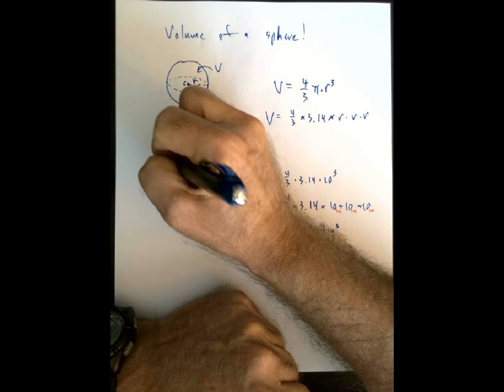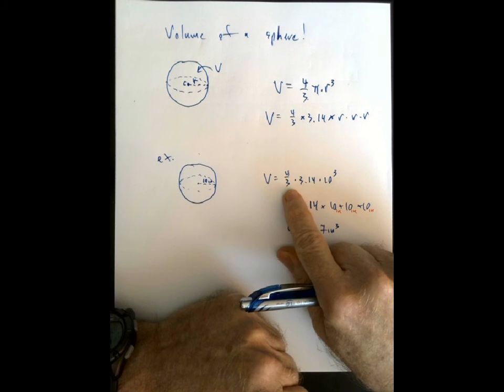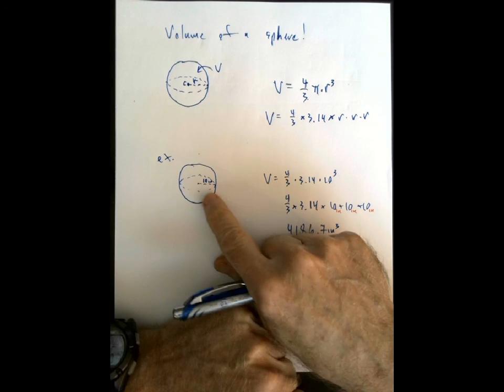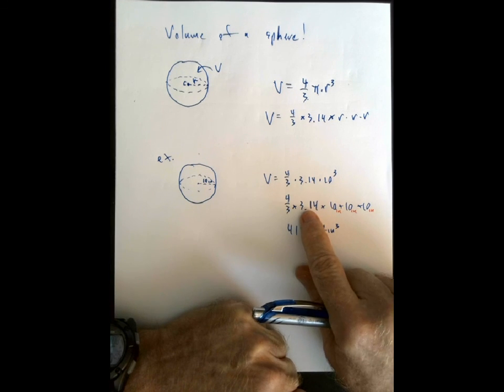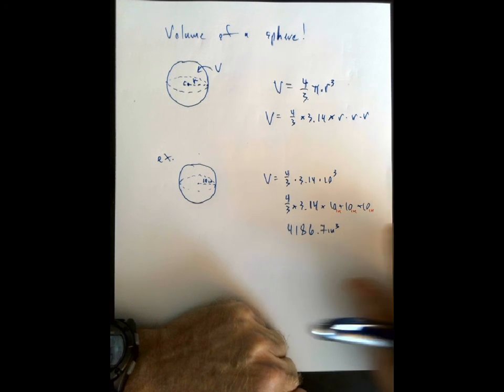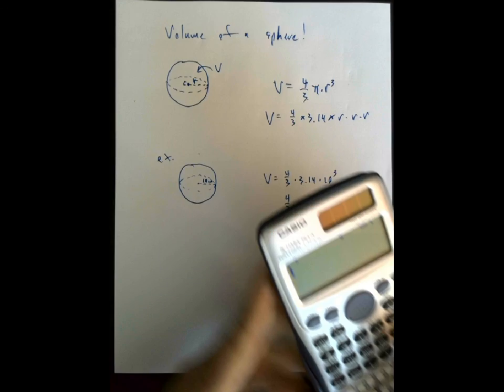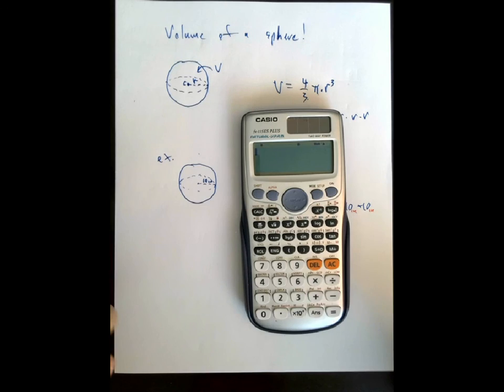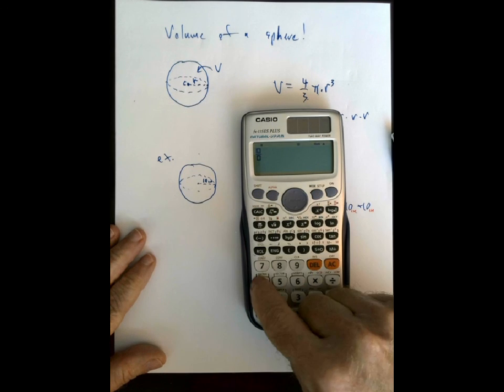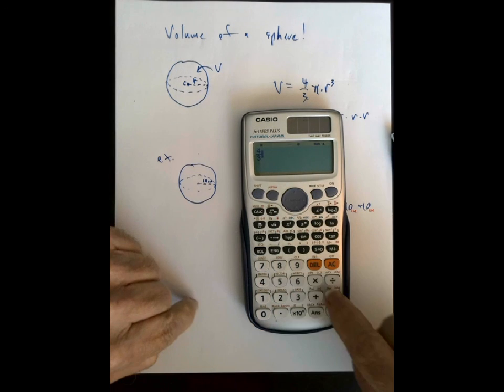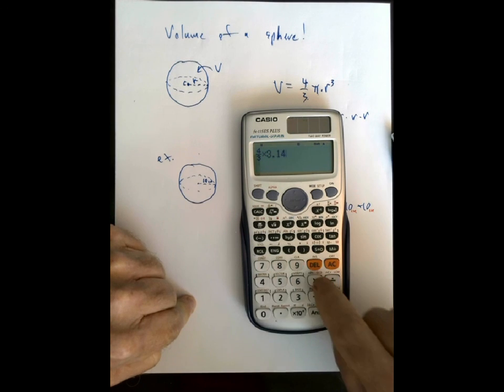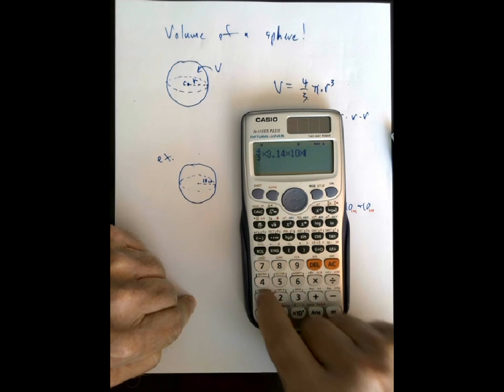So, for instance, here is example 1. The volume is 4 over 3 times 3.14, and the radius is 10 there, so I'm going to write 10 to the third power. Now, that means 4 over 3 times 3.14 times 10 times 10 times 10. Now, in my calculator, I have a fraction key, so I can just type in 4 over 3 directly. If you don't have that, you can just divide 4 divided by 3, and that will give you the fraction amount. Anyway, times 3.14 times 10 times 10 times 10.